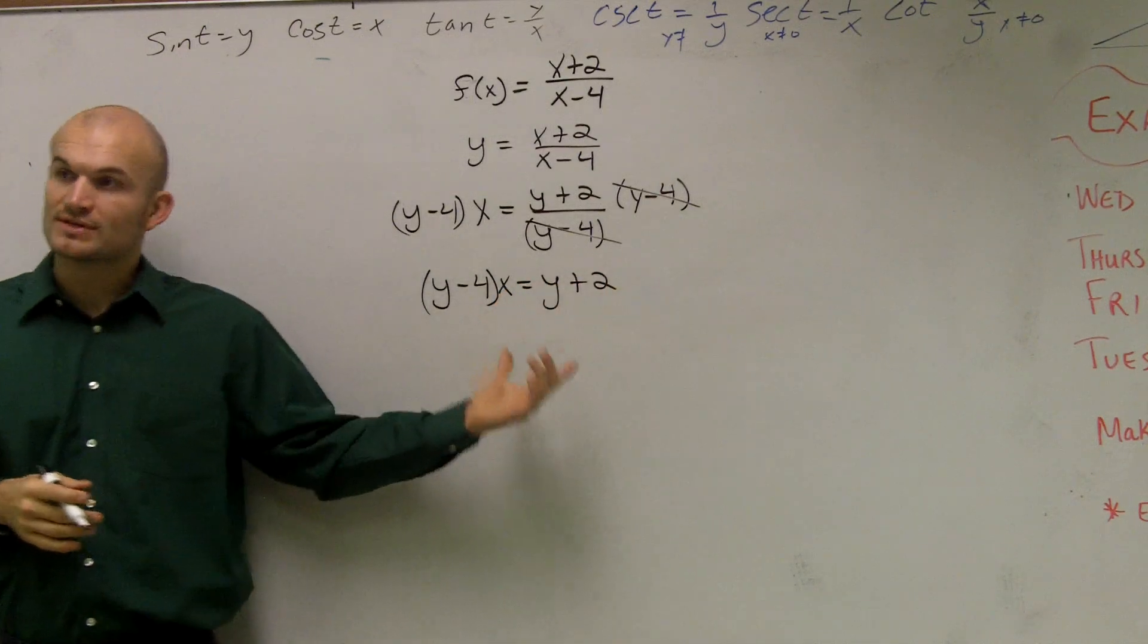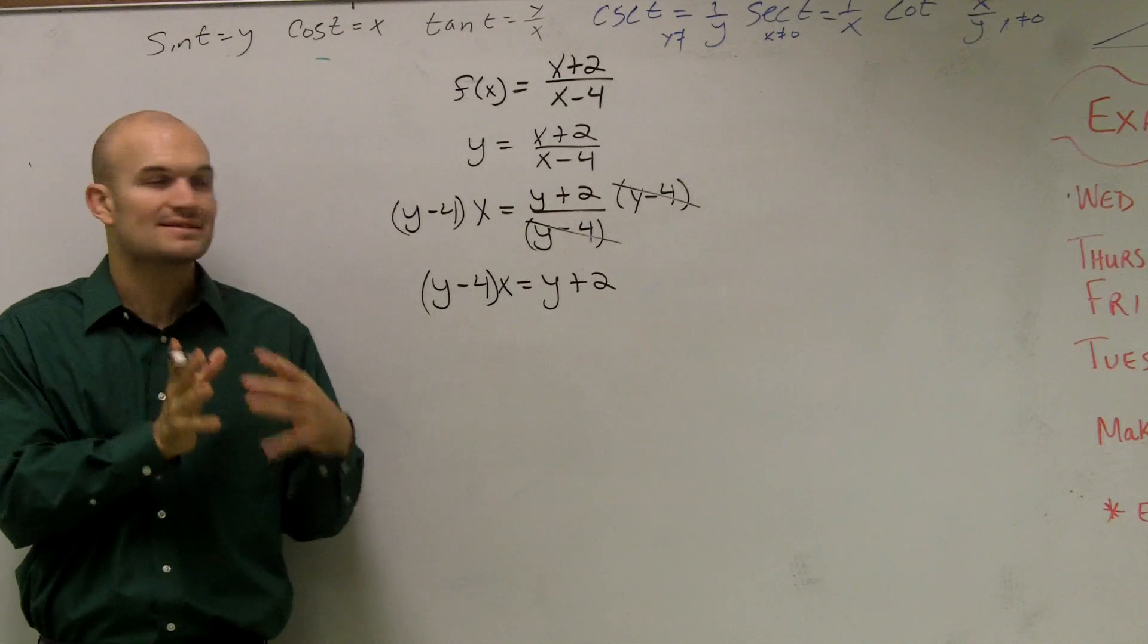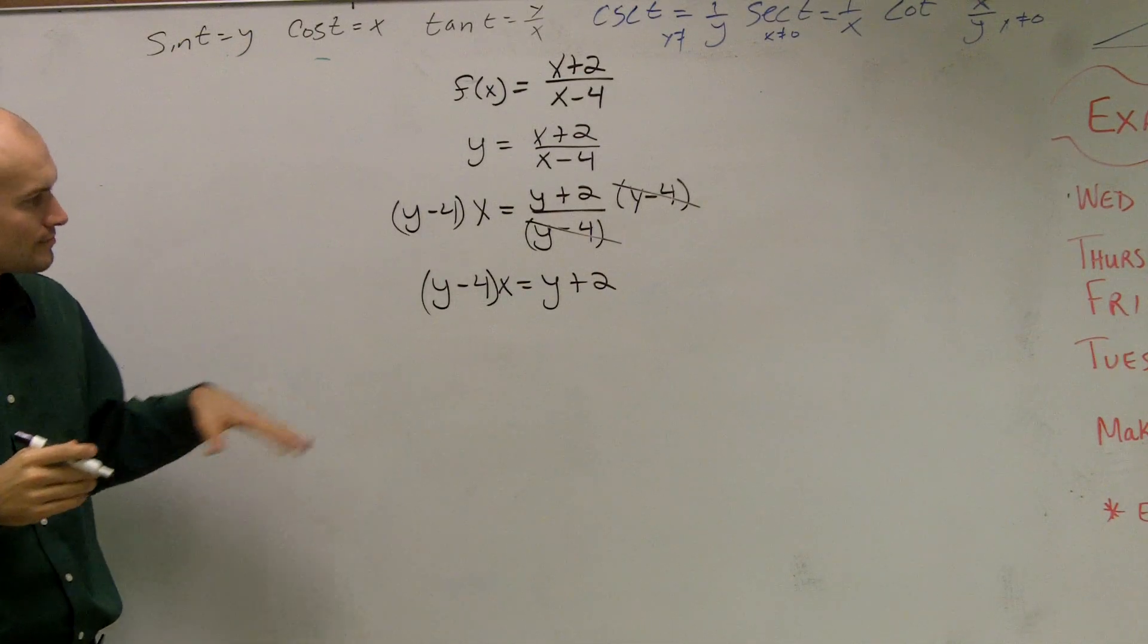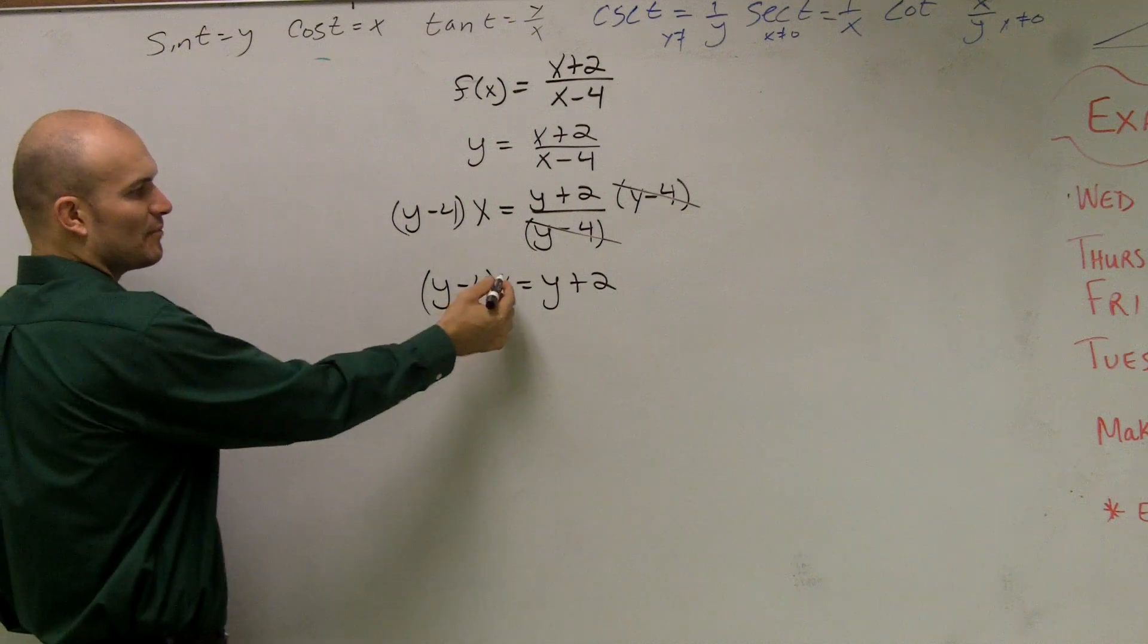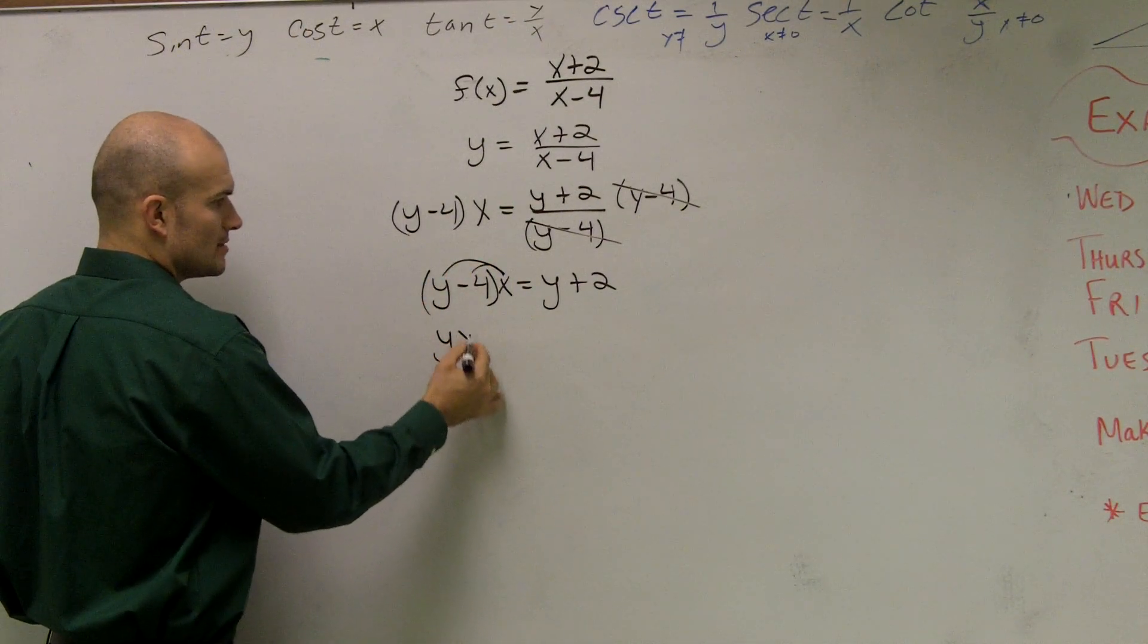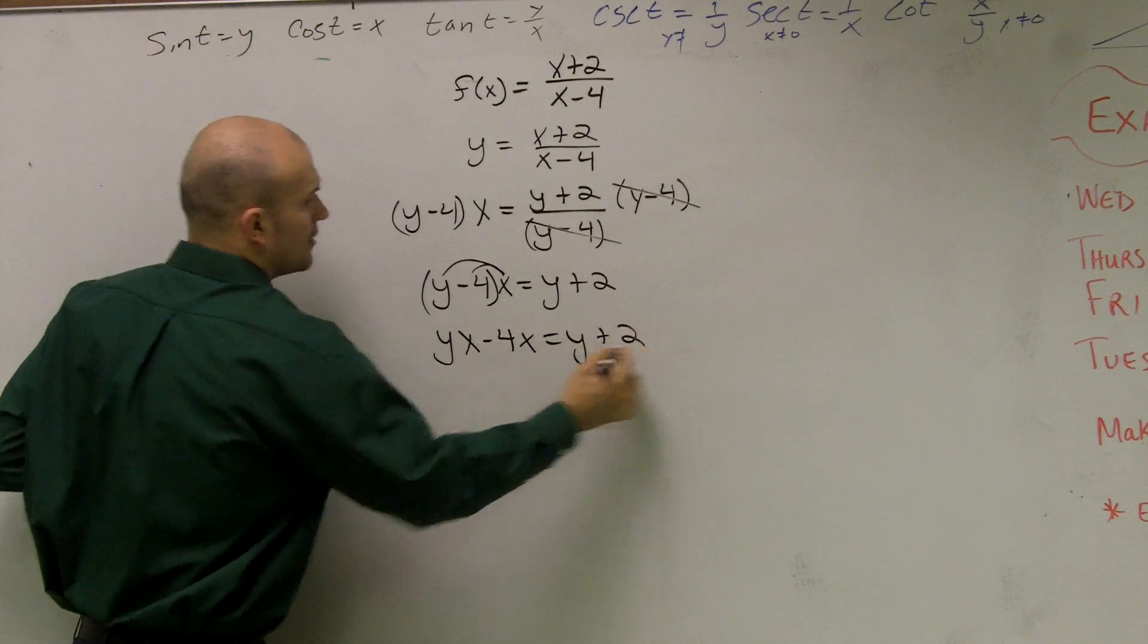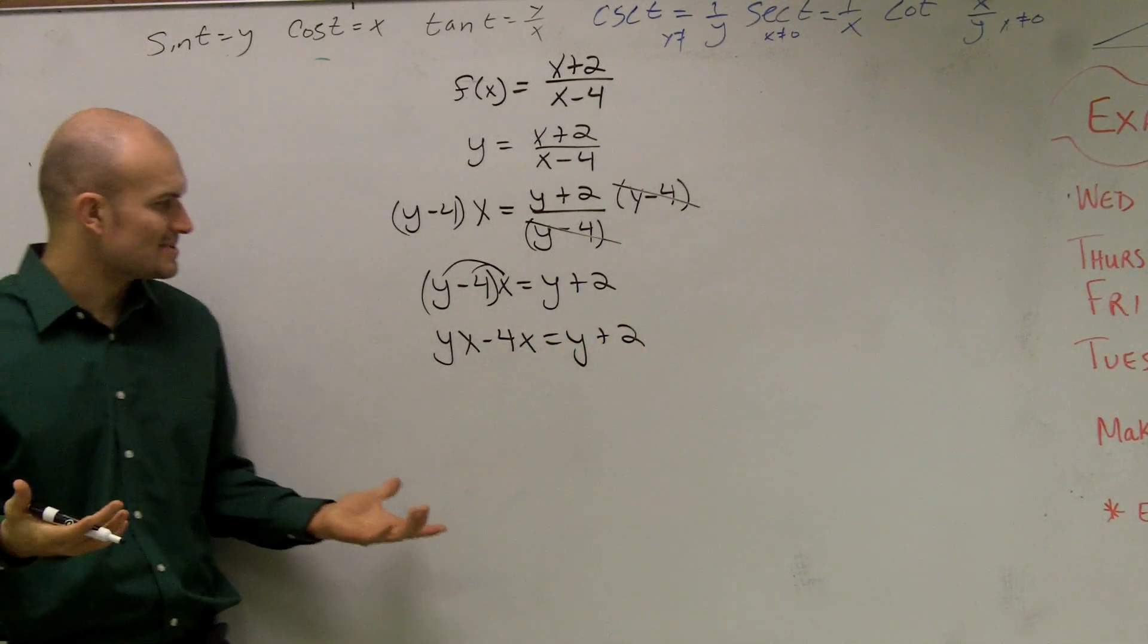So now we have a y on two different sides. So now our goal whenever solving for a variable is to get that y on the same side. So before I do that, I see I have parentheses. I'm going to do just straight up distributive property just to kind of rewrite this.